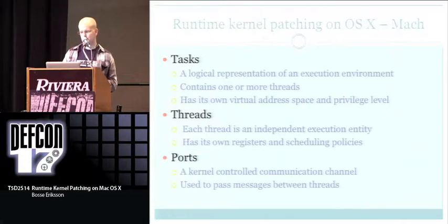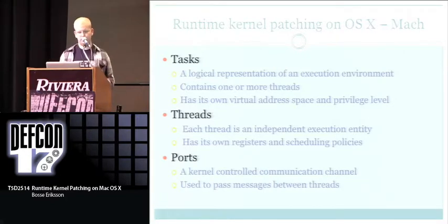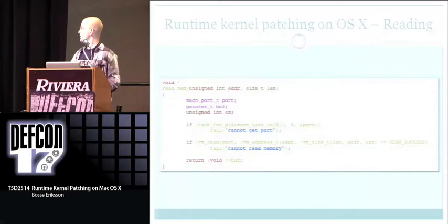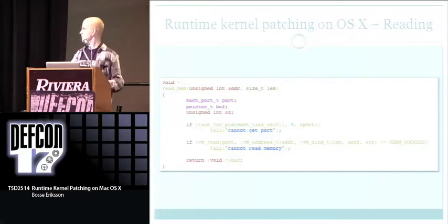The Mach part of the XNU kernel has tasks, which are a logical representation of an execution environment. Each task contains one or more threads, and a thread has its own registers and scheduling policies. There are also ports — a message communication channel used to send messages between processes. You call task_for_pid with PID zero, which is the XNU kernel, and you get back a port to the kernel. Then you use VMRead, VMWrite, and VMAllocate to manipulate the kernel's memory space.